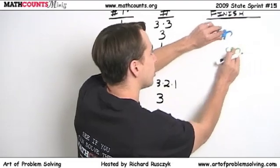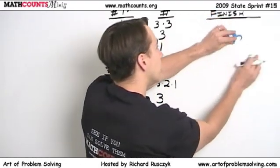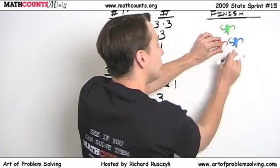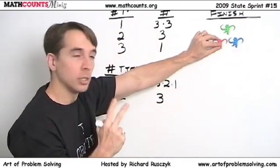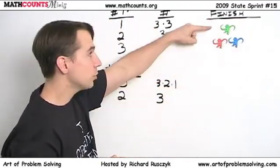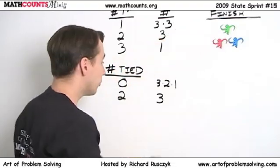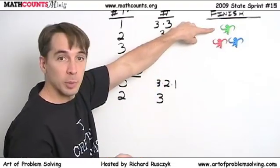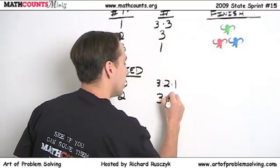And then once we've chosen someone to be all by themselves, well, we have two choices. That person could either be in last, or they could be in first. So we have two choices for how they'll finish once we've chosen who's going to be all by themselves. So for each of the three ways somebody's going to be by themselves, there are two ways for us to finish.